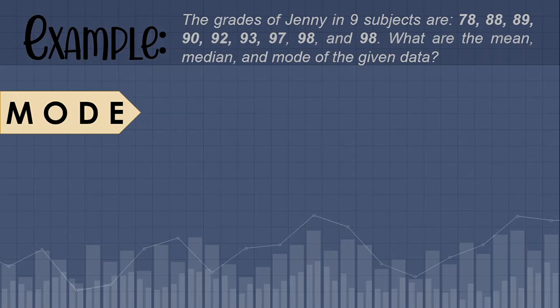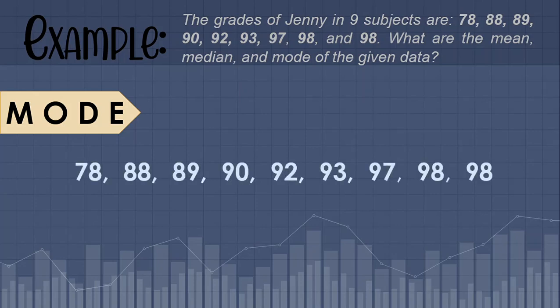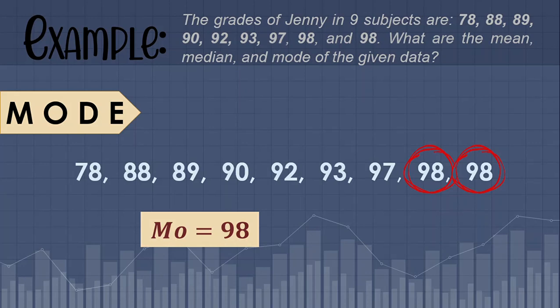Finally, we have the mode. The mode is the most frequent value in our given observation. Looking at our given set of data, the most frequent value is 98, since we have two 98s. Therefore, Mo is equal to 98.